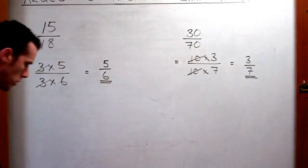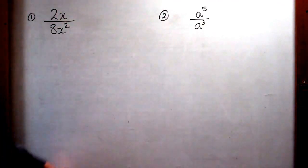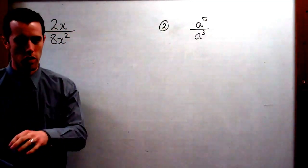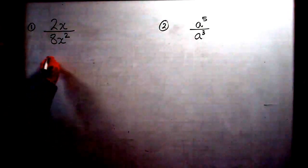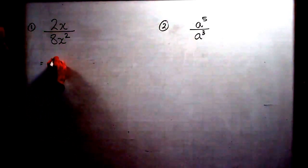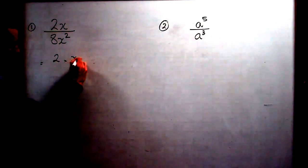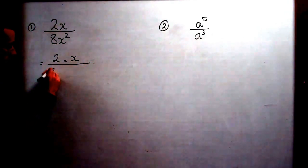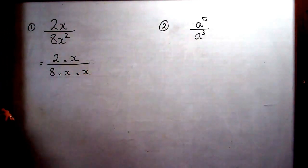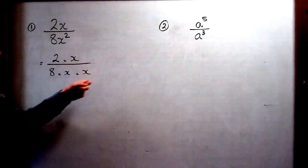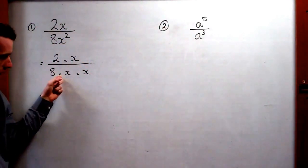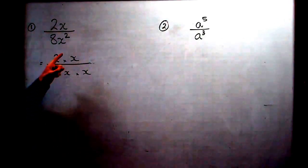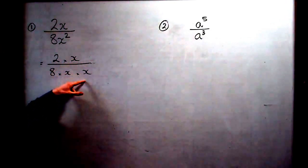Let's extend this into algebra. We have 2x over 8x squared. Let's split this up: we're going to have 2 times x on the top, and 8x squared is just 8 times x times x on the bottom. So 2 multiplied by x on top, and 8 multiplied by x multiplied by x on the bottom. Now, if you watch carefully, we can cancel one x from the top and one x from the bottom.